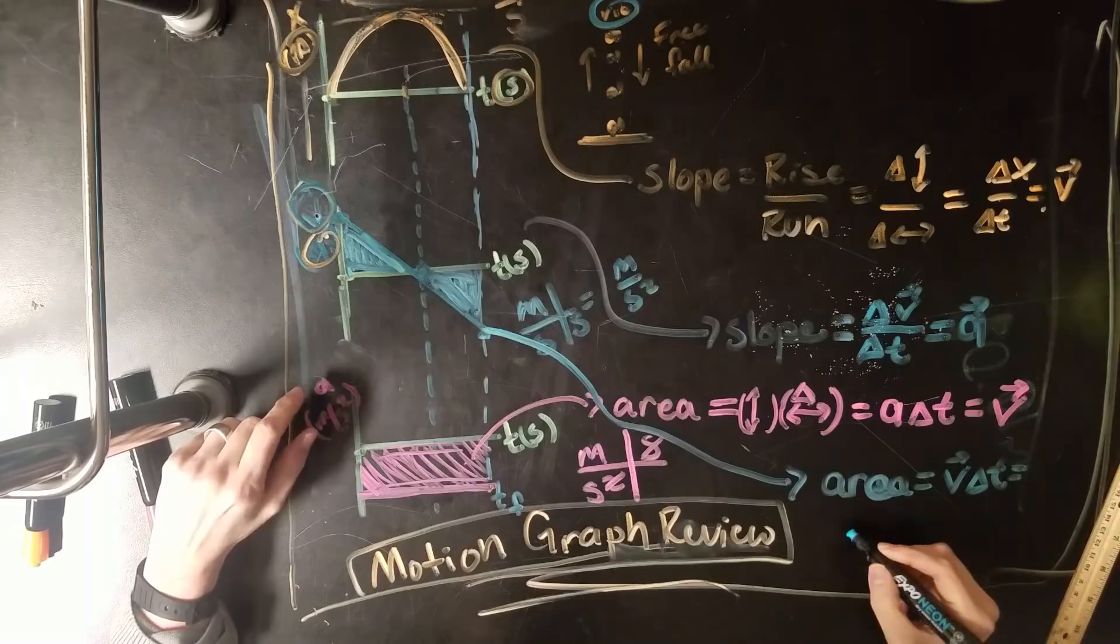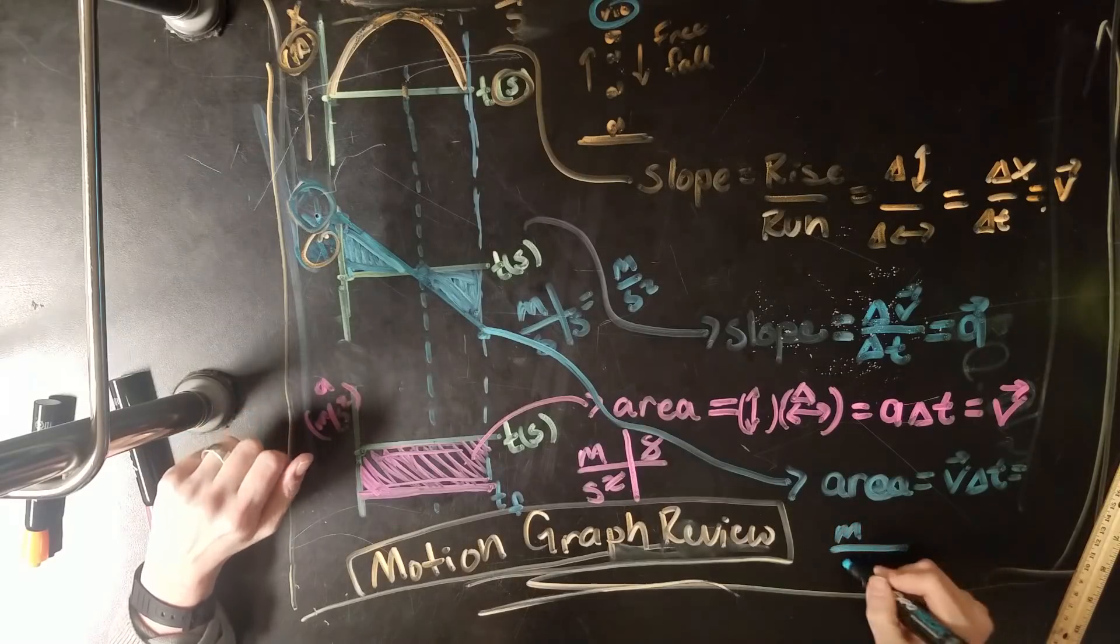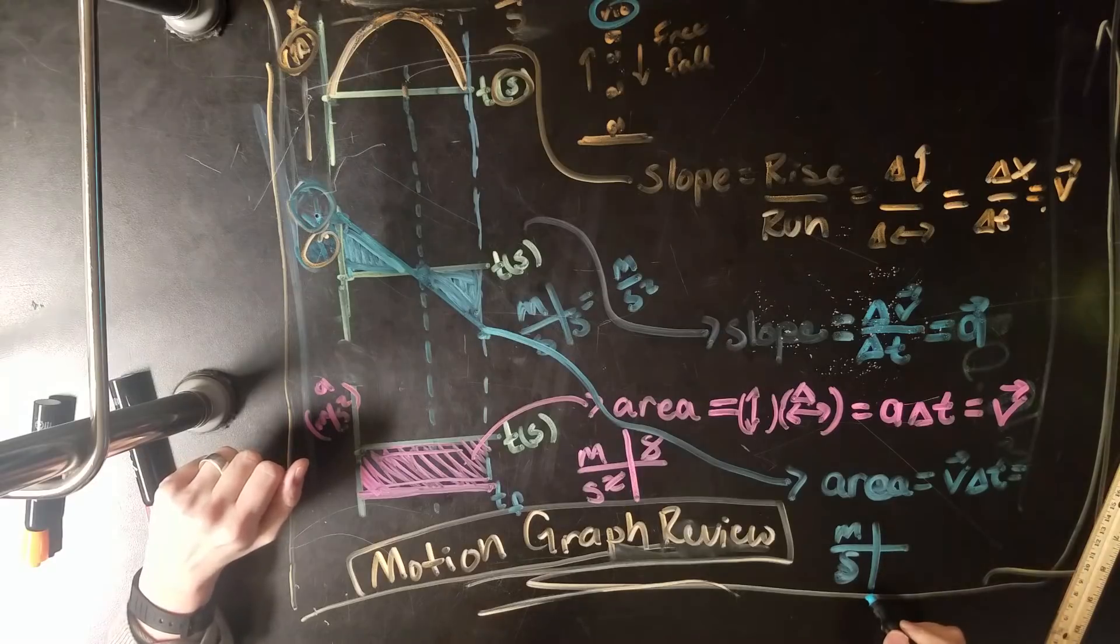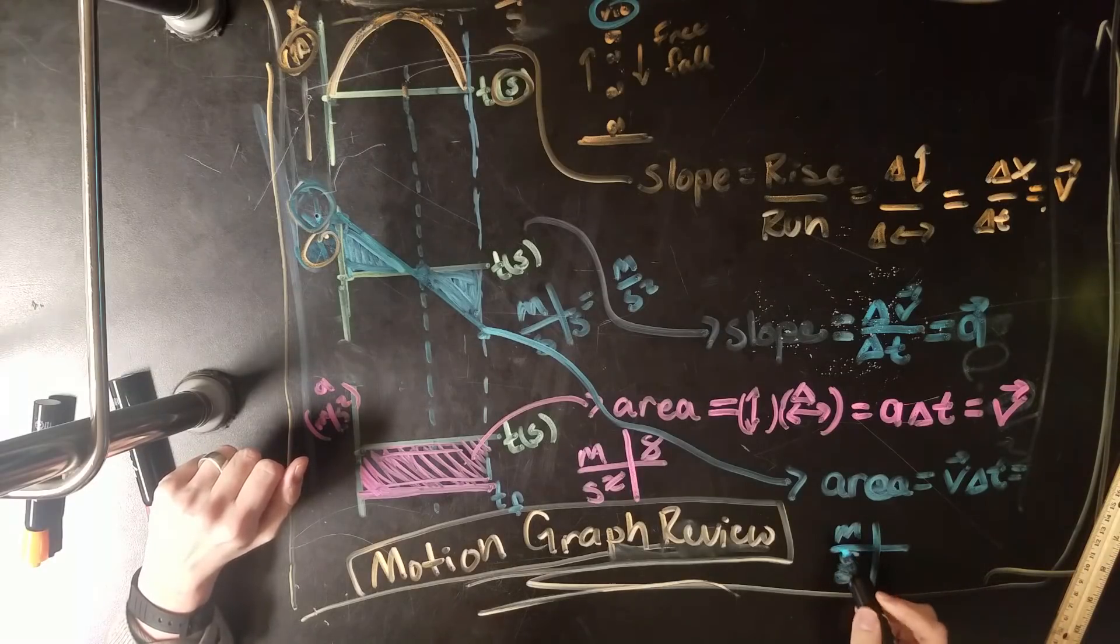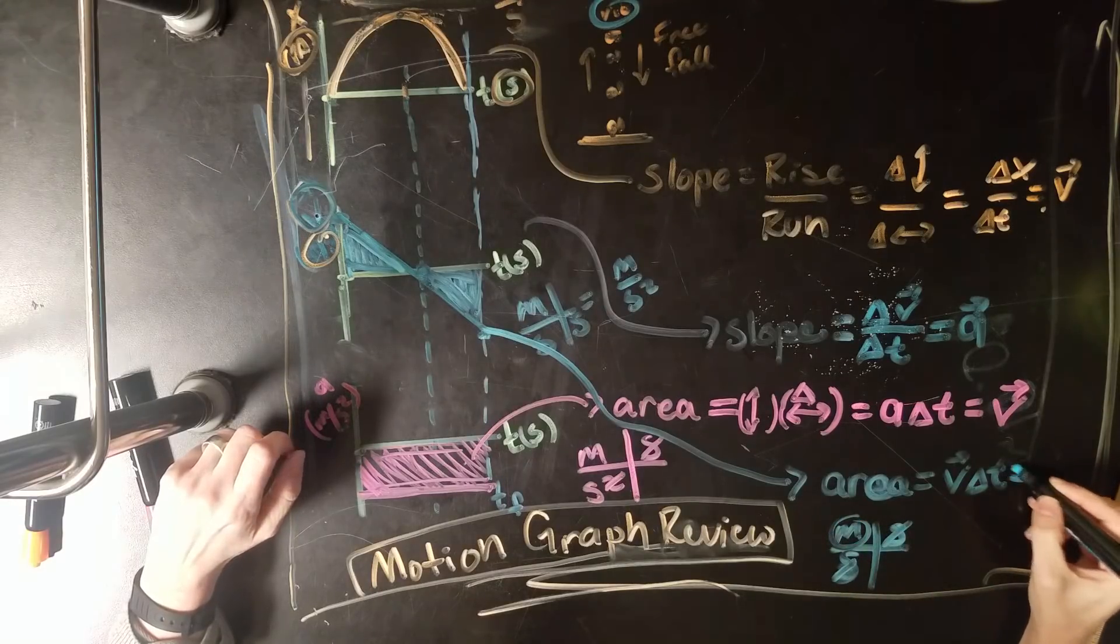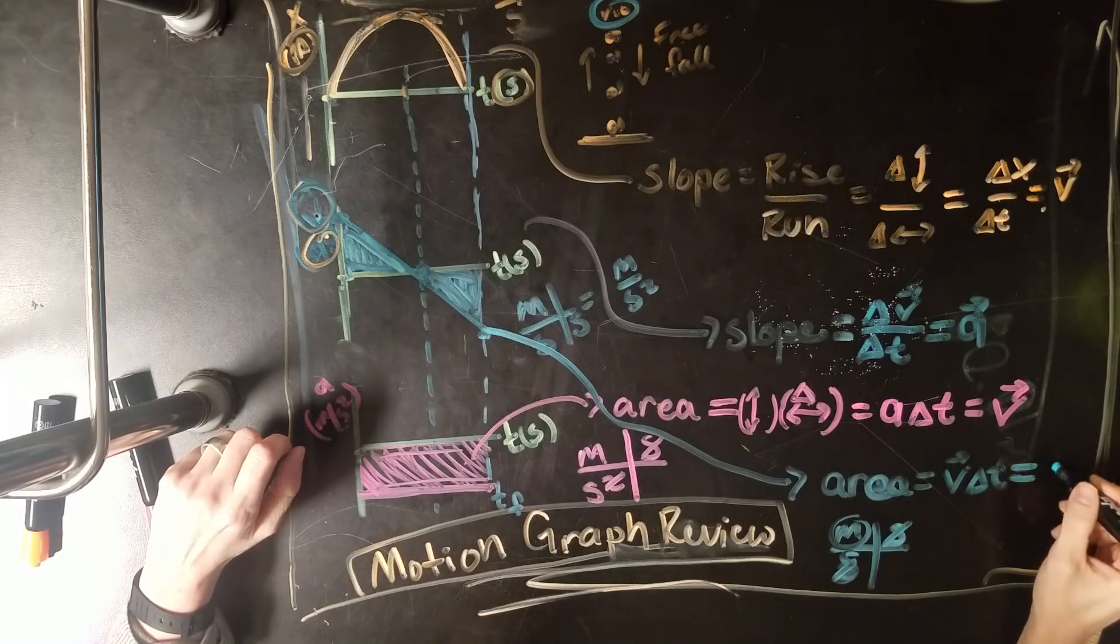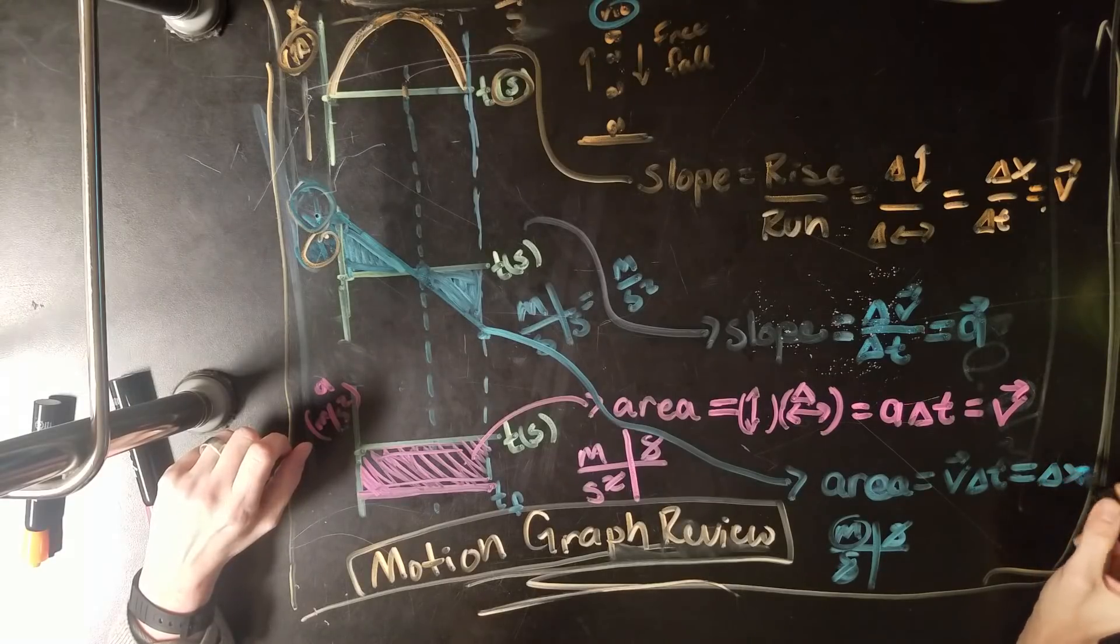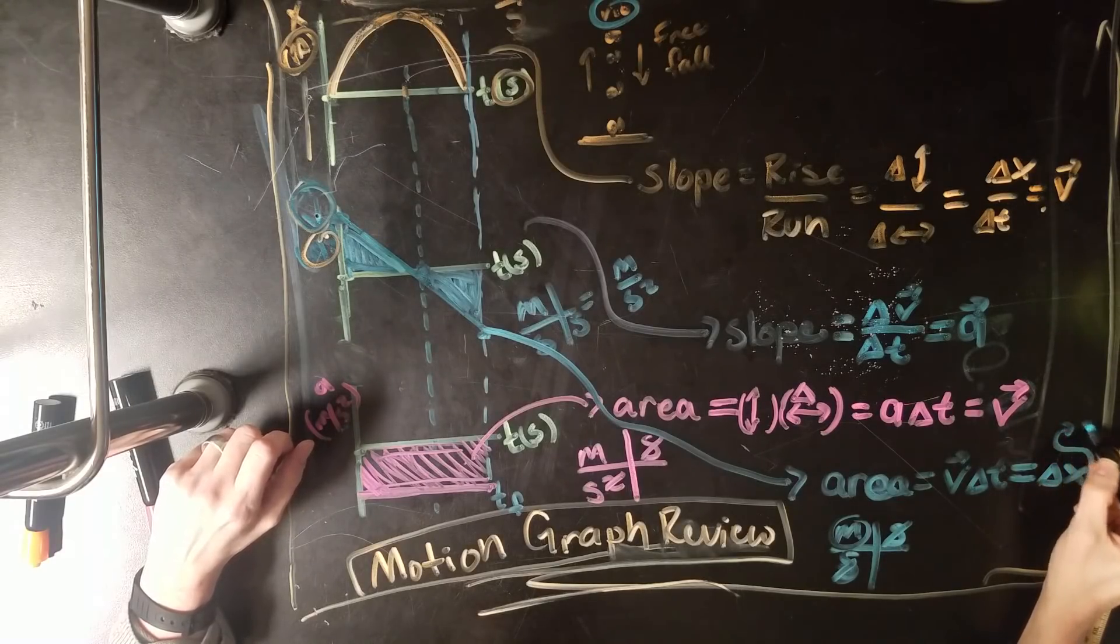And let's look at the units. So that's meters per second. Hopefully you can see this. Meters per second times second. Okay, that's meters. So guess what that is? That is just your change in position, or also known as displacement.